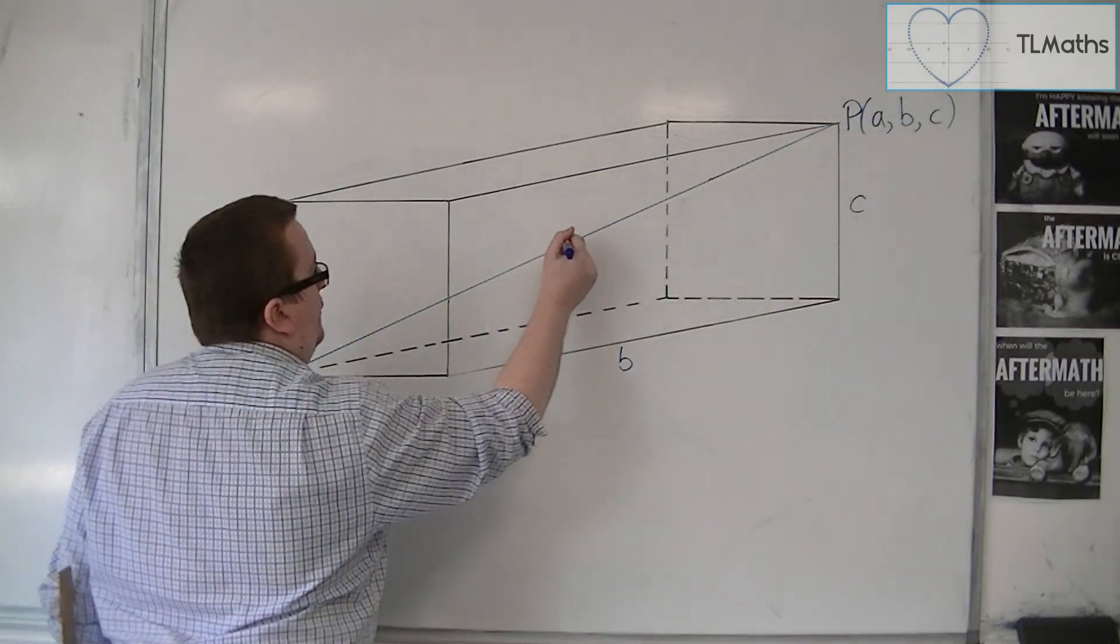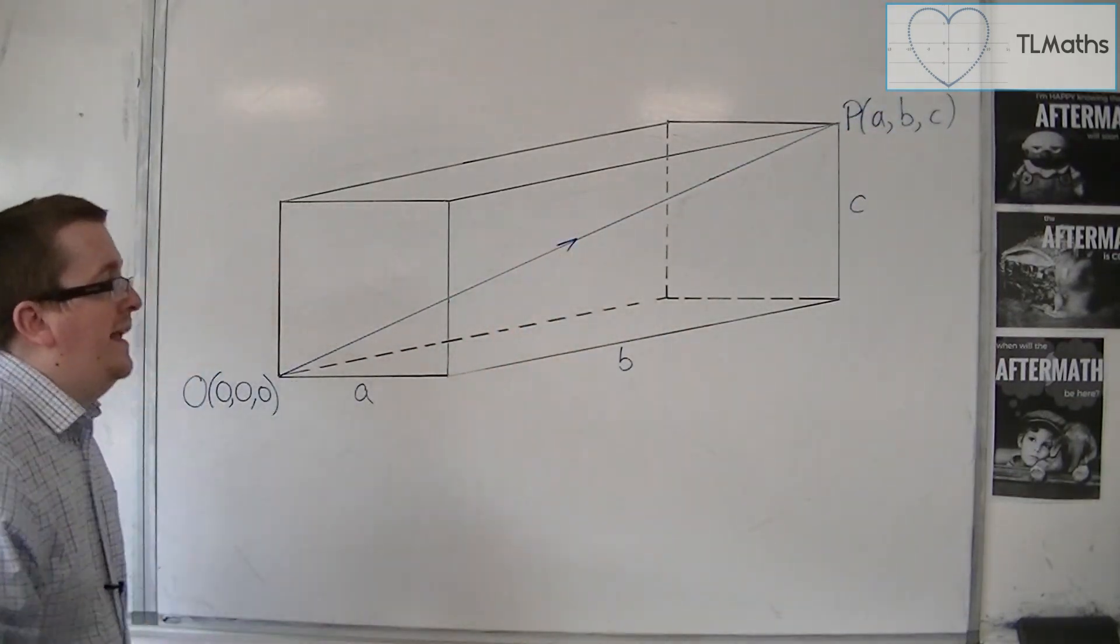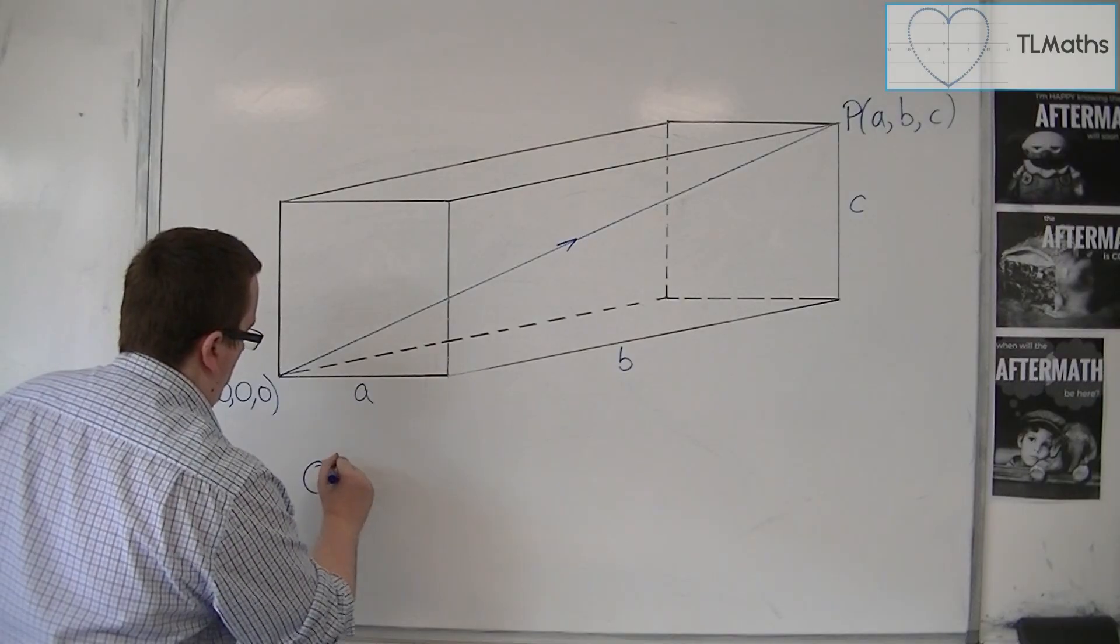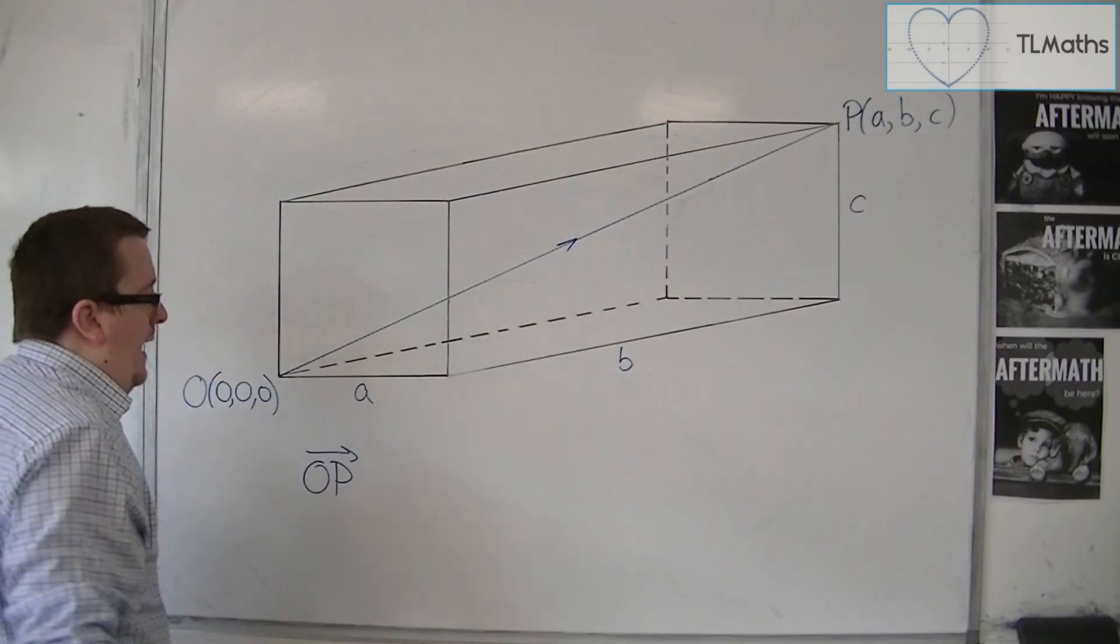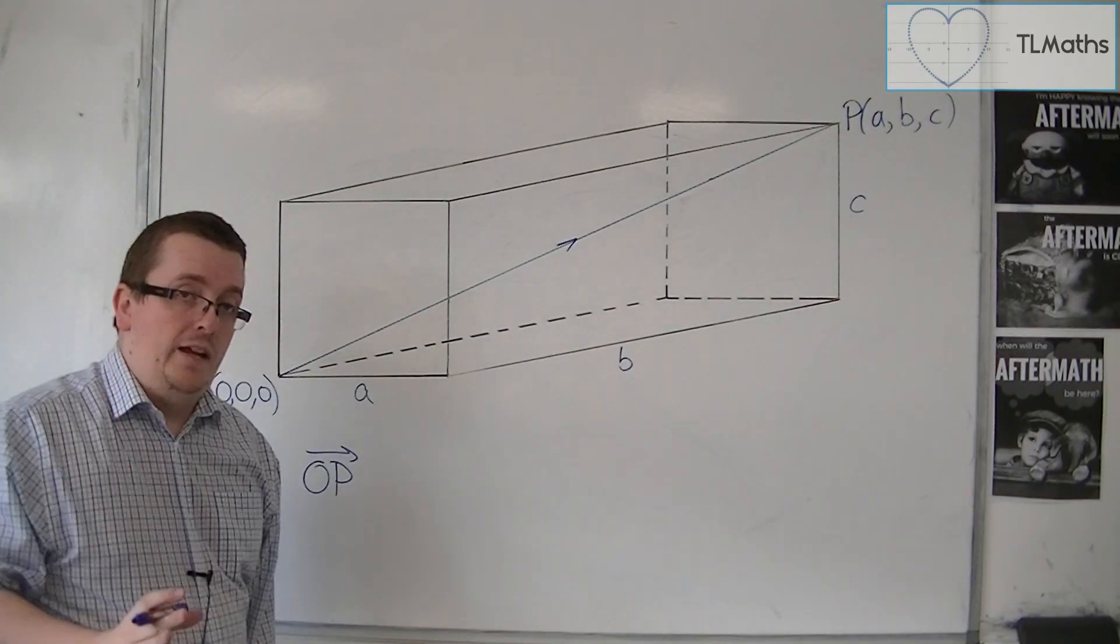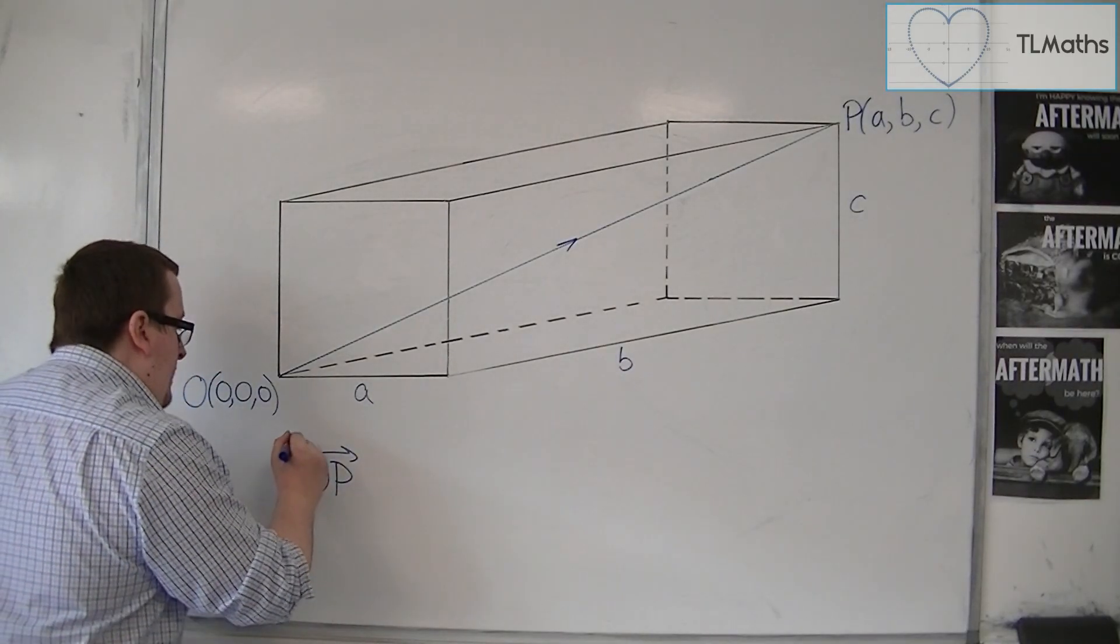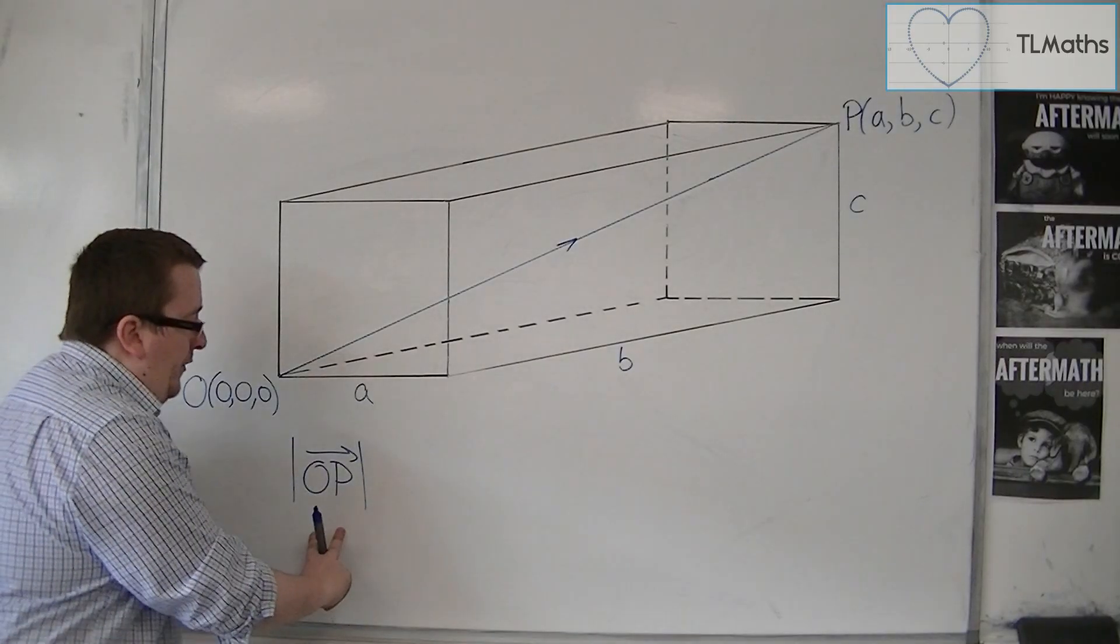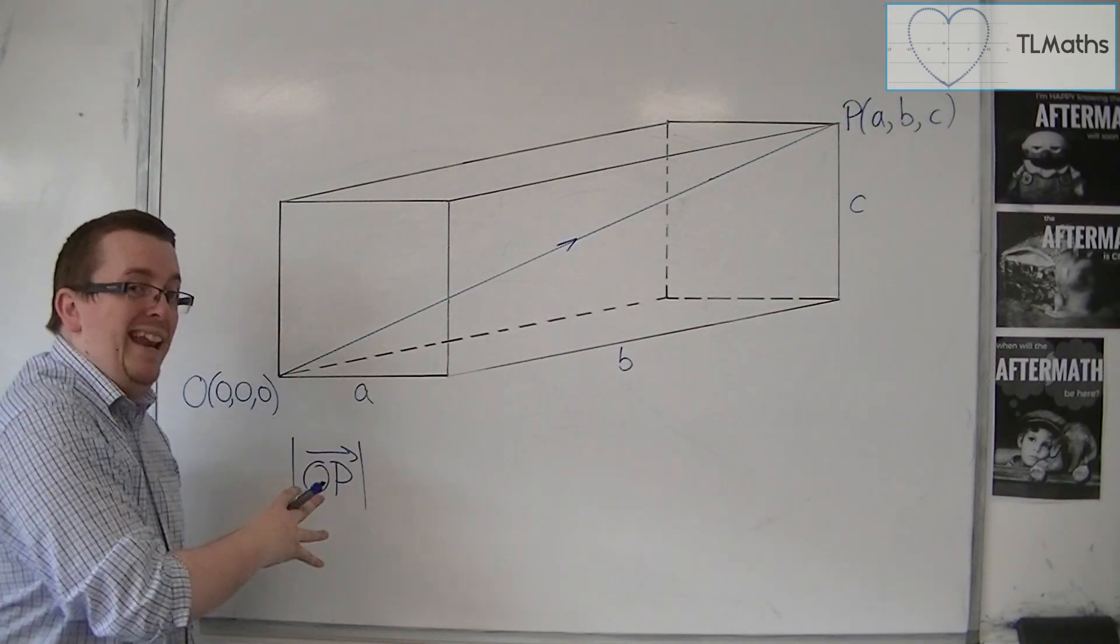This is the vector that I'm trying to find the length of: OP. When we talk about length, we usually put modular signs on either side to represent its length.